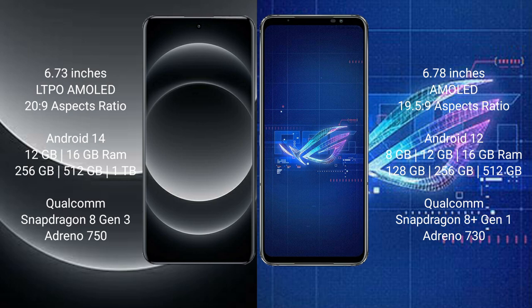Xiaomi 14 Ultra comes with 12GB and 16GB RAM and 256GB, 512GB, 1TB internal storage. It features a Qualcomm Snapdragon 823 processor and GPU Adreno 750.